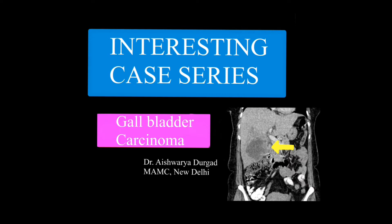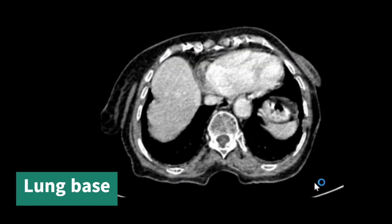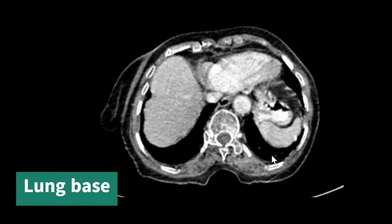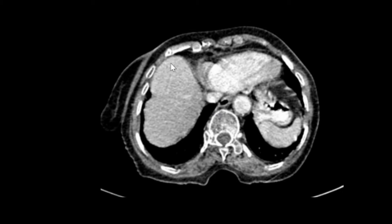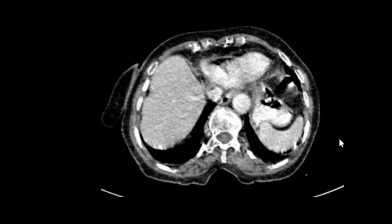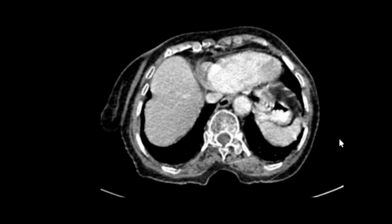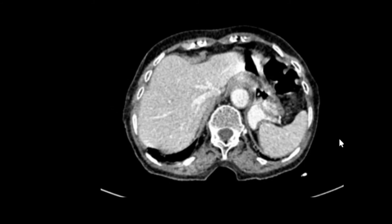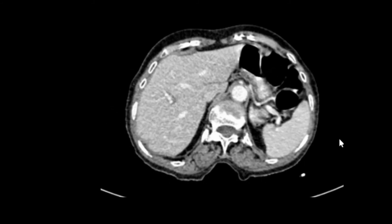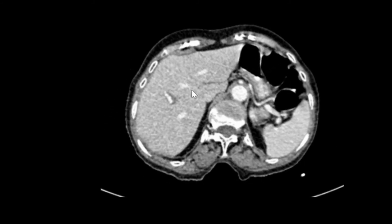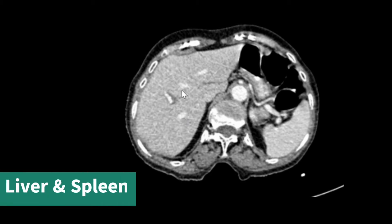Let's see contrast enhanced CT axial sections. Coming from up to down, we see the lung bases. We start to see the liver and the spleen, then as we move down into the abdominal sections. Now here we can see the liver in entirety and portal veins are enhanced, so this is a portal venous phase.